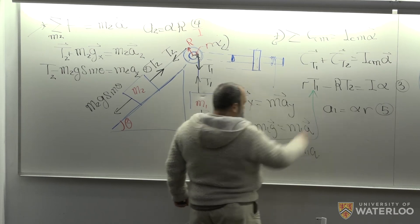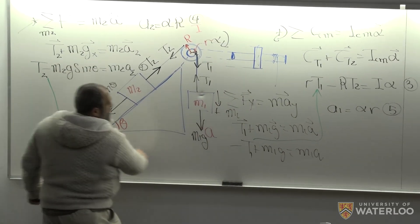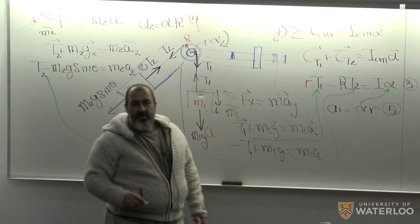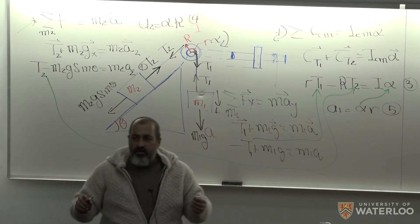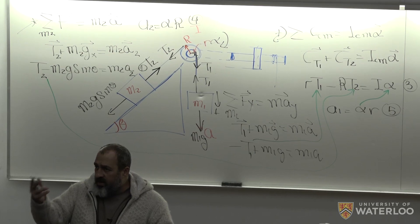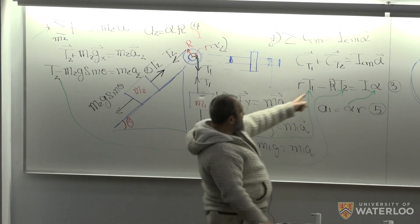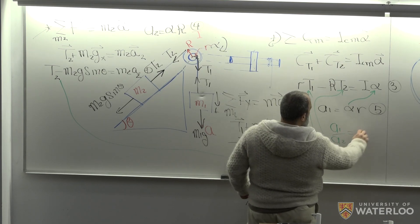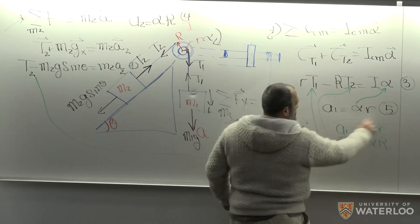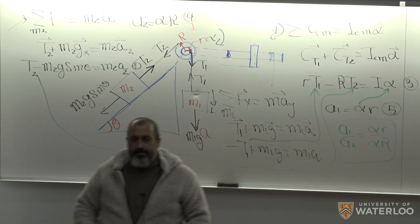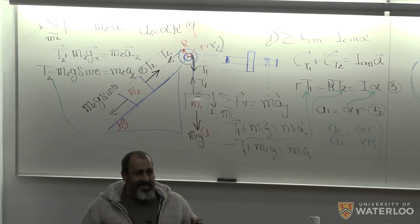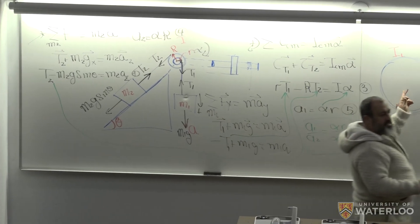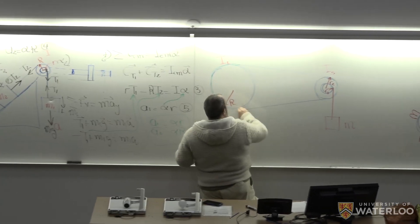You find T1 from equation one and put it into the torque equation. You find T2 from equation two and put it in there. You find alpha from the constraint equations and put it in. When you've done that, you end up with one equation and one unknown in A. But there are two A's — A1 and A2 — and they're related: A1 over A2 equals little r over capital R. That's five equations, five unknowns.